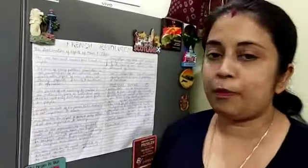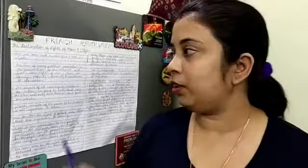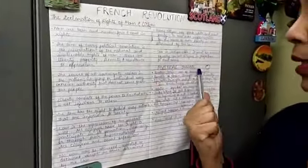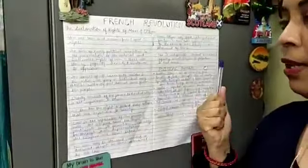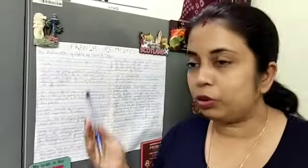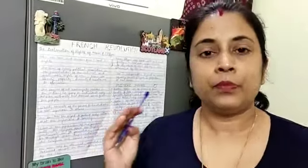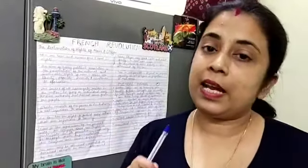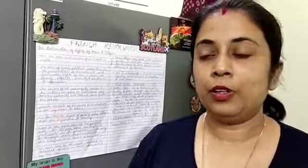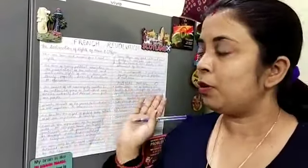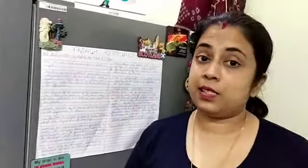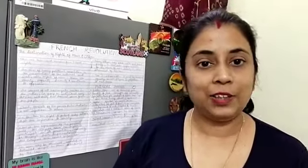That's all for today. Two topics we have done: the Declaration of Rights of Man and Citizen, and political symbols. Both are important — just go through them thoroughly, revise and memorize them. This is your today's homework. Stay healthy, stay fit, take care of yourself. Thank you.